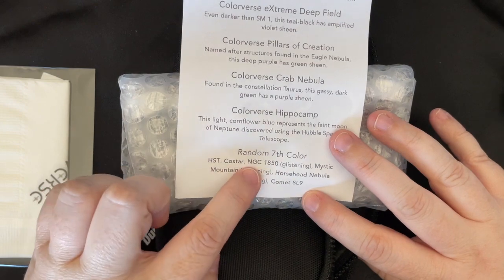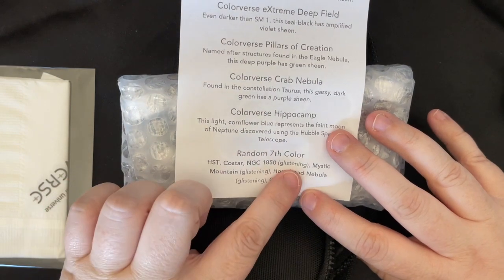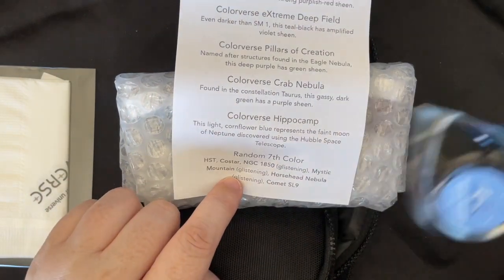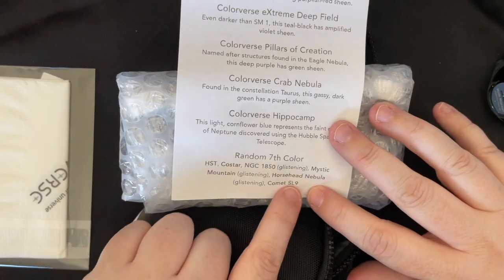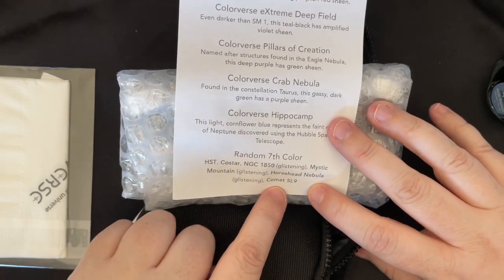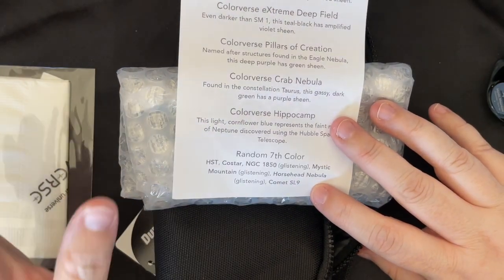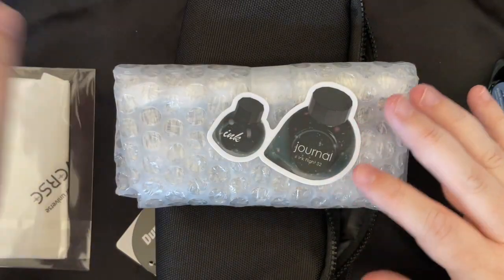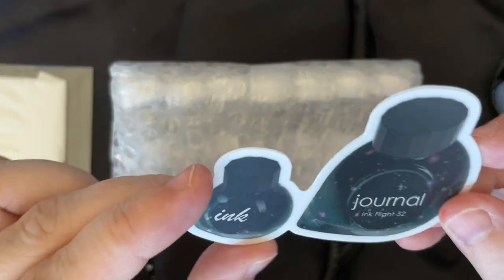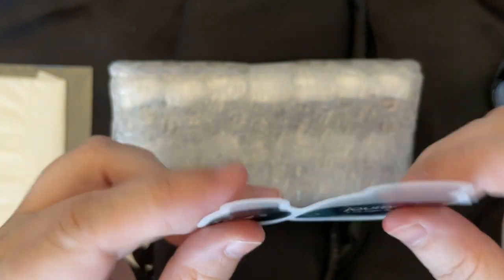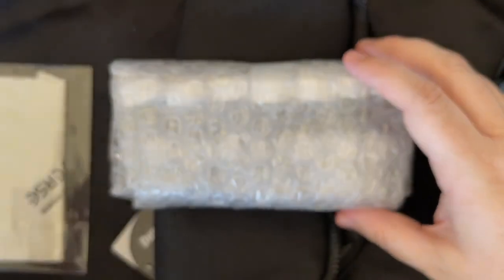Colorverse Hubble. This pinkish red ink is dedicated to astronomer Edwin Hubble. Colorverse SM1. This dark teal blue has a strong purplish red sheen. Colorverse Extreme Deep Field. Even darker than SM1. This teal black has amplified violet sheen. Colorverse Pillars of Creation. Named after structures found in the Eagle Nebula. This deep purple has a green sheen. Colorverse Crab Nebula. Found in the constellation Taurus. This gassy dark green has a purple sheen. Colorverse Hippocamp. This light cornflower blue represents the faint moon of Neptune discovered using the Hubble Space Telescope. And then a random seventh color which is one of the mini bottles that comes with it.